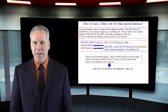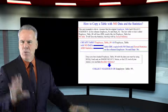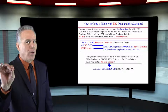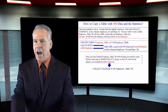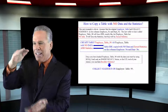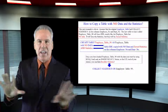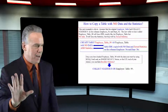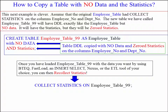Now stay with me. Here we say create table employee_table_99 as employee_table, which once again means I want it to be an exact copy of that data definition, language, indexes, anything — it's exactly the same — but don't bring the data with it. No data, just keep the exact structure, but bring the statistics with it.